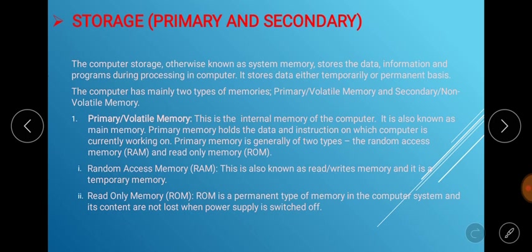The primary memory is the internal memory of the computer, also known as the main memory. It holds the data and instructions on which the computer is currently working. The primary memory is also of two types: Random Access Memory (RAM) and Read Only Memory (ROM).